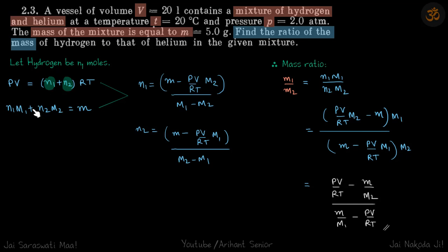PV equals N1 plus N2 into RT, and second, the conservation of mass. So N1 times molecular mass M1 plus N2 times molecular mass M2 equals total mass.